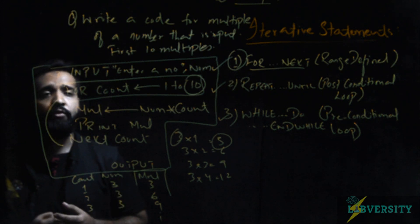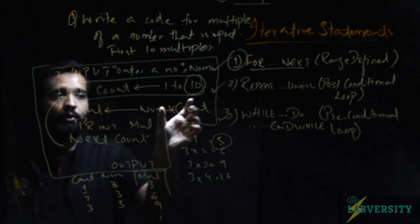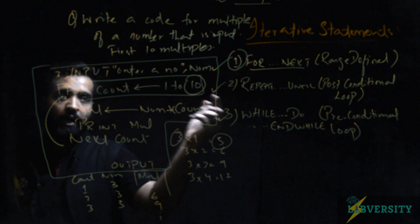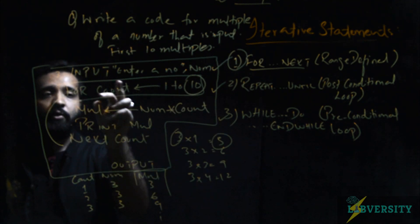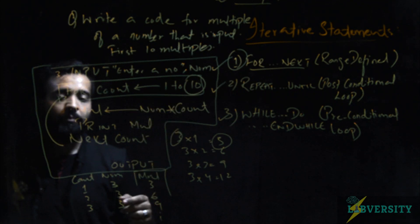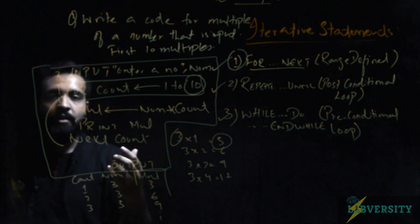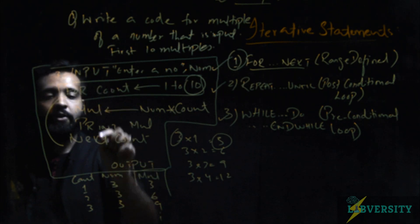In order to define a for loop, you first need to know how many number of repetitions there will be. Here we had to write 10 multiples so I initialized it from 1 till 10. You have to write 'for' and then take a variable called count or any variable in which the values will be incremented one by one. In order to end a for loop, you will write the next statement. So it will run from here till here.